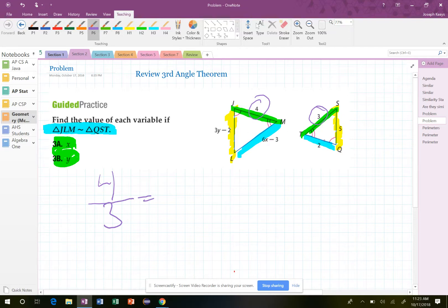So let's find the yellow first. It doesn't really matter. So 4 over 3 is equal to 3Y minus 2 all over 5.